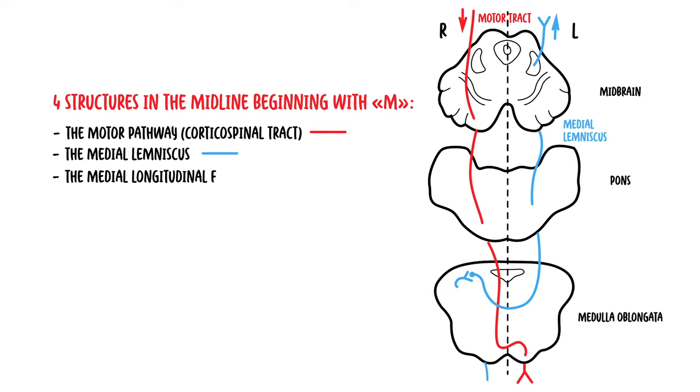You have the medial longitudinal fasciculus, which is the connection between cranial nerve number six and cranial nerve number three. And then the last structure that is medial is the motor nucleus and the nerves. So medially, all these nuclei here would be your motor nuclei for the cranial nerves.